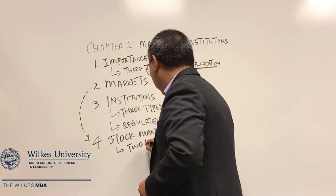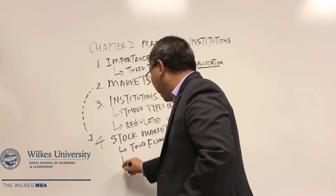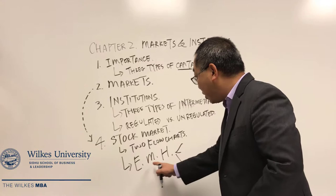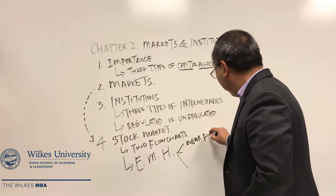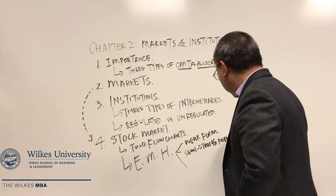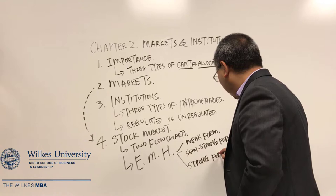The second flow chart is about the efficient market hypothesis, which has three types: the weak form of market efficiency, the semi-strong form of market efficiency, and the strong form of market efficiency.